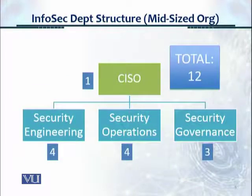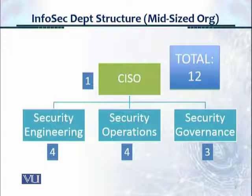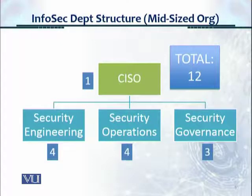The total headcount here is 12. In the large-sized organization we had about 30 people, and the big cut has happened in security operations because we no longer have a 24-hour fully staffed SOC. We have four security engineering personnel — one each for network, systems, database, and application. Security operations has about two people in the day shift and one person each in the second and third shifts. Security governance has three people: one for policy, one for compliance, and one for frameworks.